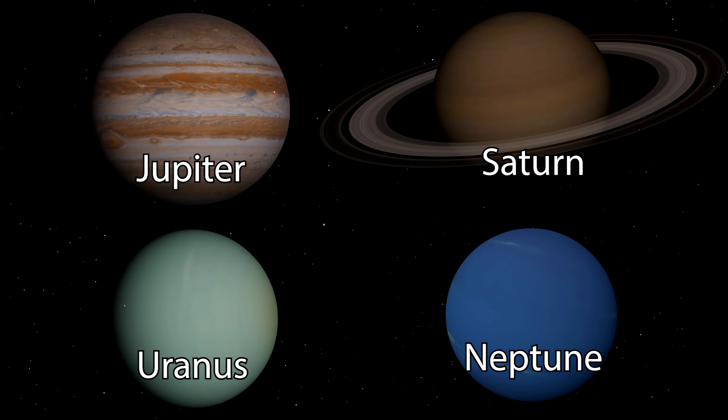The other four planets—Jupiter, Saturn, Uranus, and Neptune—are all gas giants that have no surface and are extremely cold due to their distance from our sun.